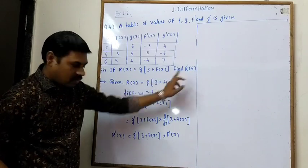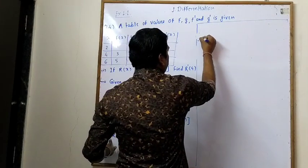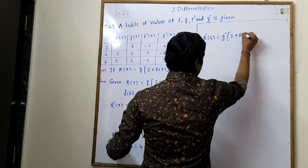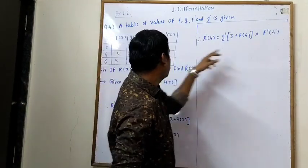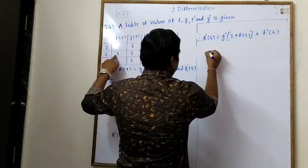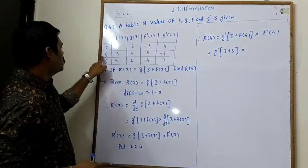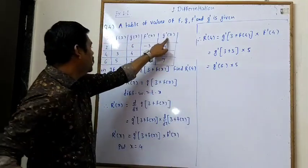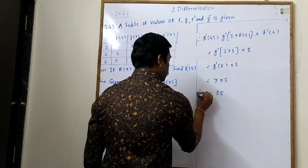By the chain rule, r'(x) = g'(3 + f(x)) · d/dx(3 + f(x)). The derivative of 3 is 0 (constant), and derivative of f(x) is f'(x). So r'(x) = g'(3 + f(x)) · f'(x). To find r'(4), put x = 4. From the table, f'(4) = 3 and f(4) gives 3 + 3 = 6, so g'(6) = 7. Therefore r'(4) = 7 · 5 = 35.